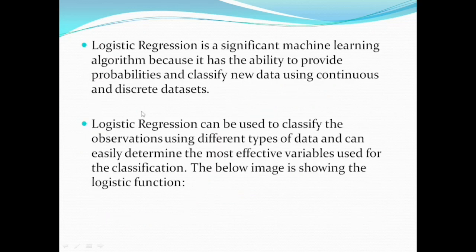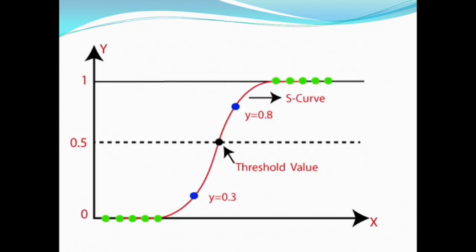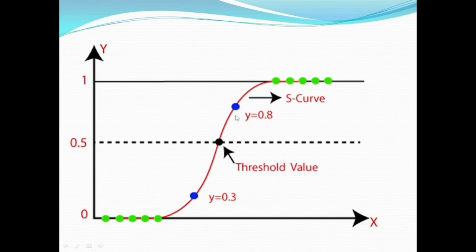As we already discussed, it takes probability values. The probability values are derived from zero to one. The threshold value used here is 0.5. Values above the threshold value will be classified as one class, and values below the threshold will be classified as another class. For example, 0.8 is above the threshold value, so it is classified as class A. And 0.3 is classified as another class.